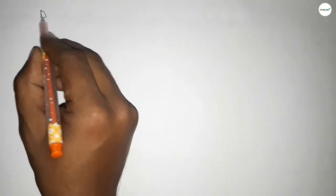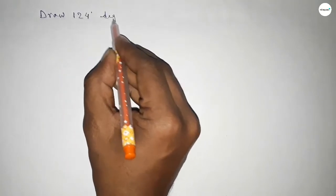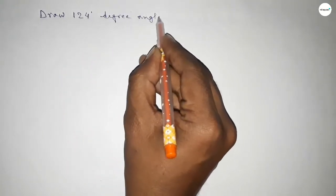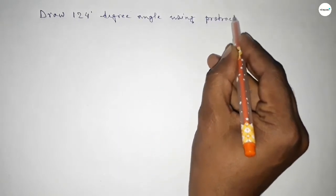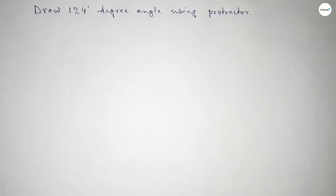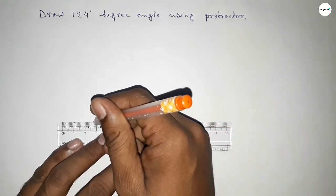Hi everyone, welcome to SSR Classes. Today in this video we have to draw a 124 degree angle by using a protractor. So let's start the video. First of all, we have to draw here a straight line of any length.